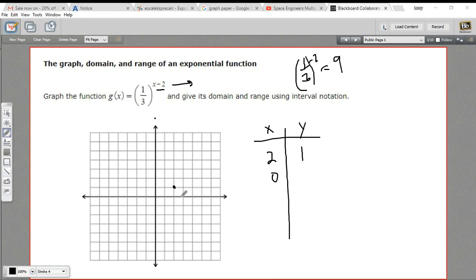And then let's take a point to the right of this point here. Let's put in a positive three. Three minus two is one. So that's just one-third. So the point three gives a value of one-third for the function.